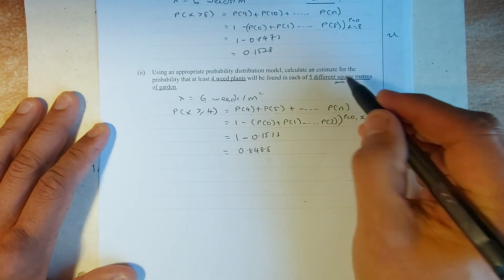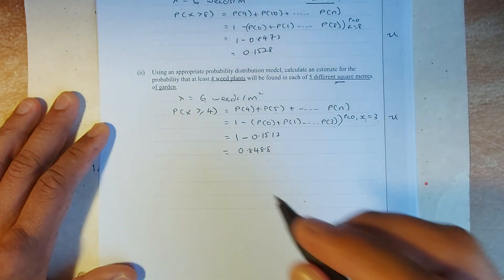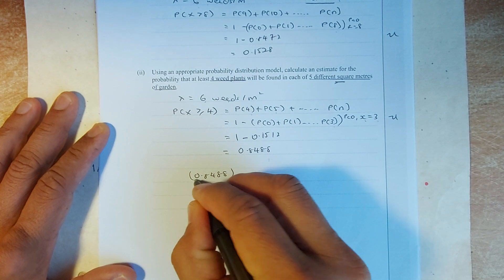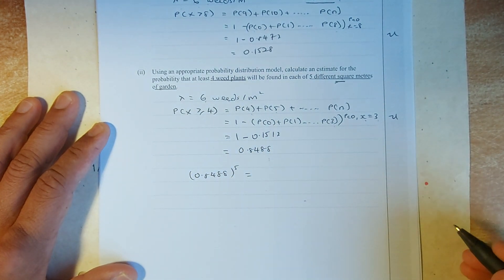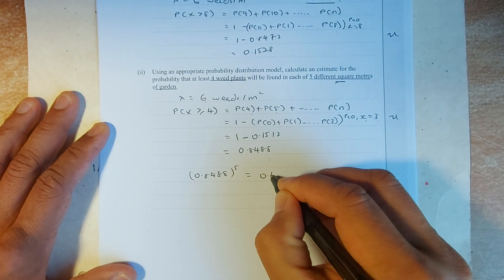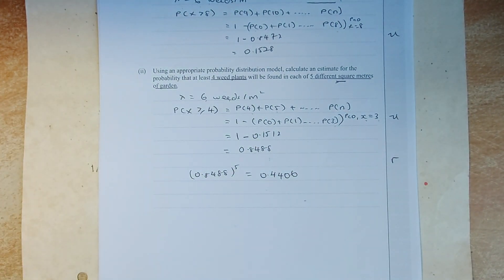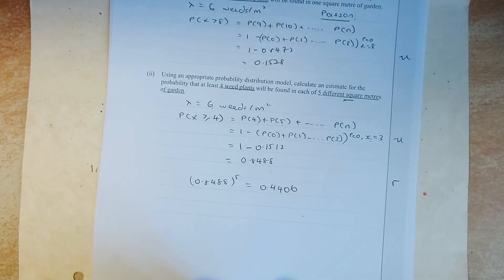But they say in 5 different square meters. Because you have 5 different slots. You must put 0.8488. Multiply 5 times or power of 5. And put in your calculator. It's going to be 0.4406. And that is a merit. We shall continue now.